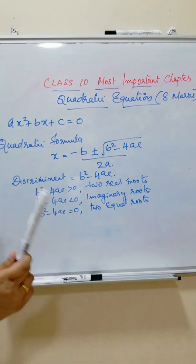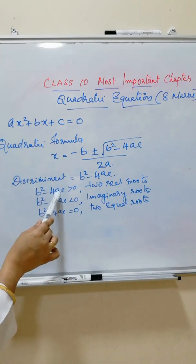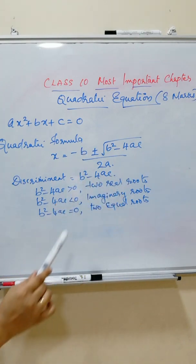There are 3 conditions for discriminant. If b square minus 4ac is greater than 0, it has 2 real roots.